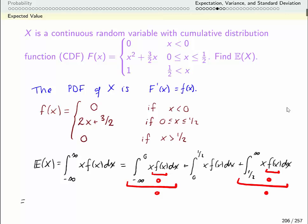So I just need to evaluate the area under the curve from 0 to 1 half of x times f(x) dx, and on the interval from 0 to 1 half, I know that my probability density function is 2x plus 3 halves.